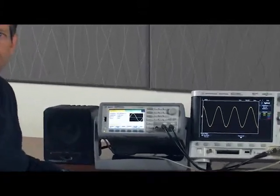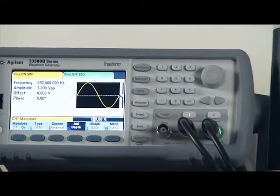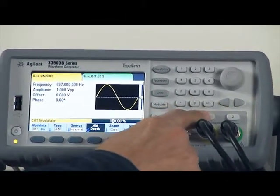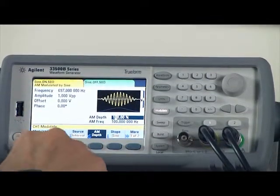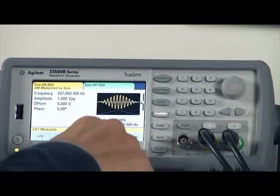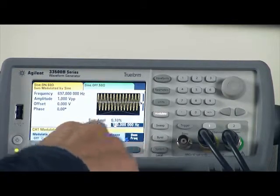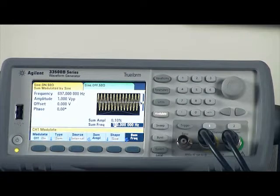Let's now add the second tone, which is at 1209 hertz. We do that with the modulation menu. There's a modulation type called sum.